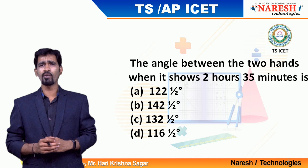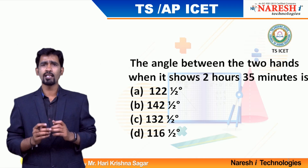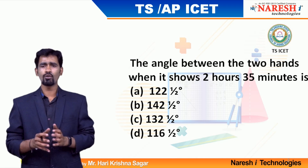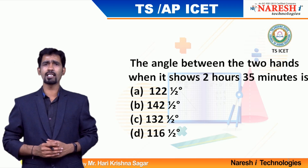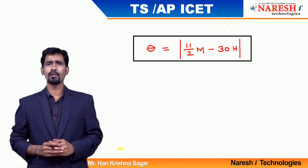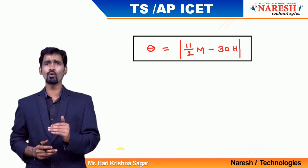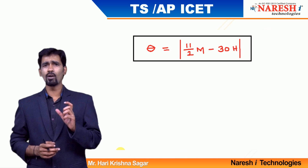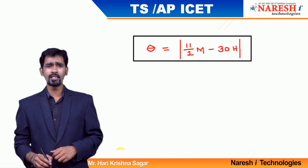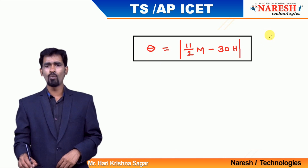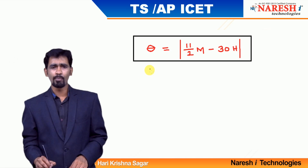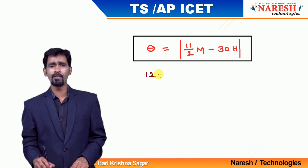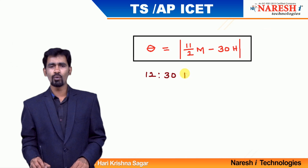How do you tackle questions based on the angle between the minutes and hour hand? Take an example and try to solve it. You can use a very simple formula: theta is equal to 11/2 × m minus 30h. In order to find the angle between the minutes and hour hand, theta is what we need. The m value and h value are directly given in the question. For example, I want to find the angle between the minutes and hour hand if the time is 12 o'clock 30 minutes. So if it is 12:30 PM, what is the angle?